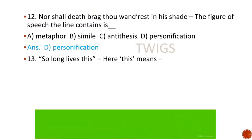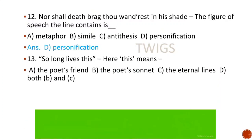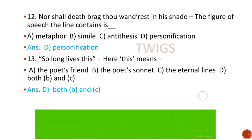Next MCQ: 'So long lives this' — here 'this' means: the poet's friend, the poet's sonnet, the eternal lines, both B and C. Here option B, the poet's sonnet, has been considered as the eternal lines. Since options B and C are not different, the right answer is option D, both B and C.